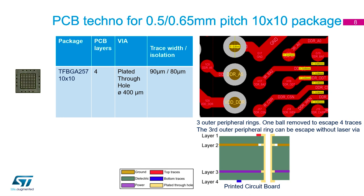Again, you can choose a package based on which periphery you require — whether you need the 32-bit or 16-bit DDR interface, how many layers you want, whether you need laser vias or standard plated through holes. You've got that flexibility depending on what you're doing and how you want to design your physical board.